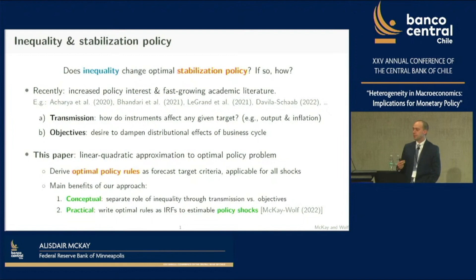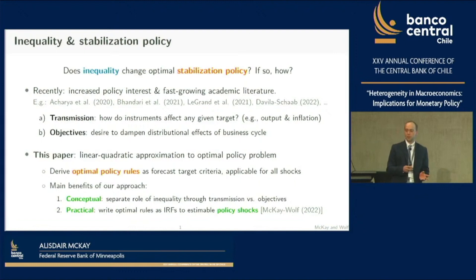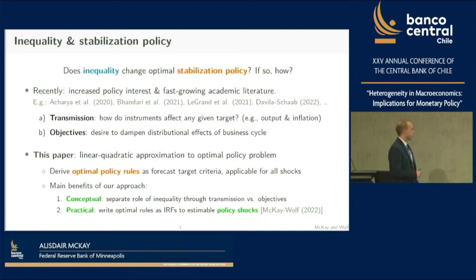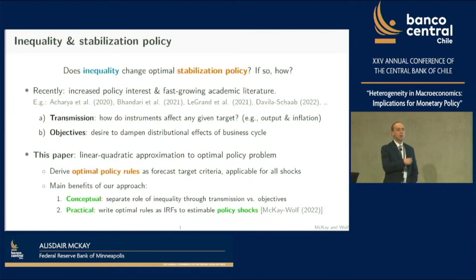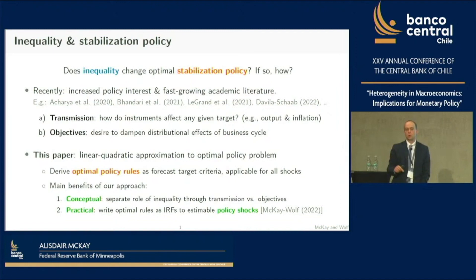What we do in this paper is the familiar linear quadratic approximation to the policy problem—familiar from representative agent models—applied to a heterogeneous agent model. We derive optimal policy rules in the form of forecast target criteria that apply for any aggregate shock. This approach lets us separate transmission versus objectives considerations, and we can write optimal policy rules in terms of objects that could in principle be directly measured in the data, pointing to what types of data are informative.